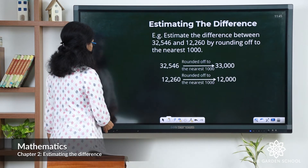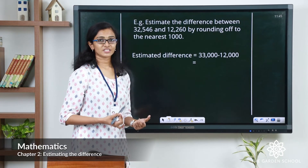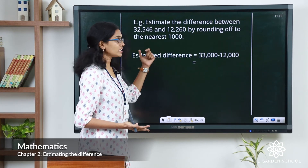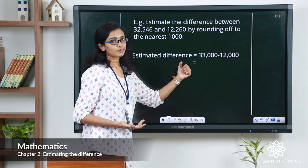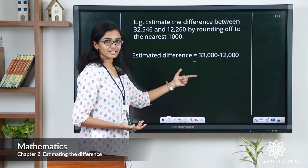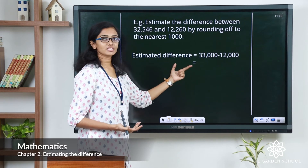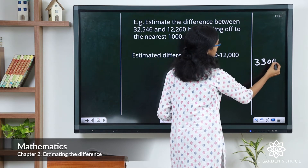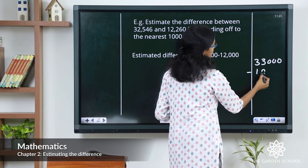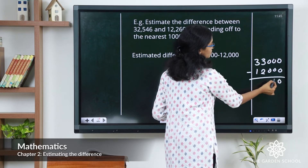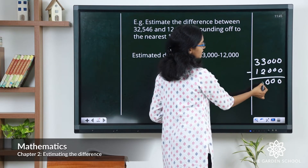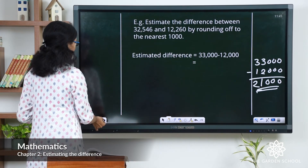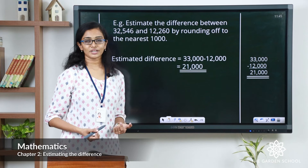Now let's find out the estimated difference. We subtract the estimated values of the minuend and the subtrahend. Substituting the numbers, we have 33,000 minus 12,000. Let's do the subtraction in the working column: 0, 0, 0, then 3 minus 2 is 1, and 3 minus 1 is 2. So the estimated difference is 21,000.